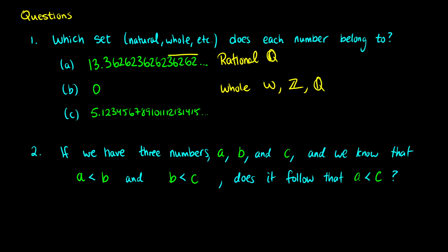What about 5.123456789101112131415? This pattern might seem predictable — we can assume maybe 16 is next — but we're not sure because it's not clear if there is a pattern. There's no indication that the next numbers are the next numbers. So this is an irrational number. We can't guarantee what the next numbers are; it appears to be non-repeating and non-terminating, so it is irrational.